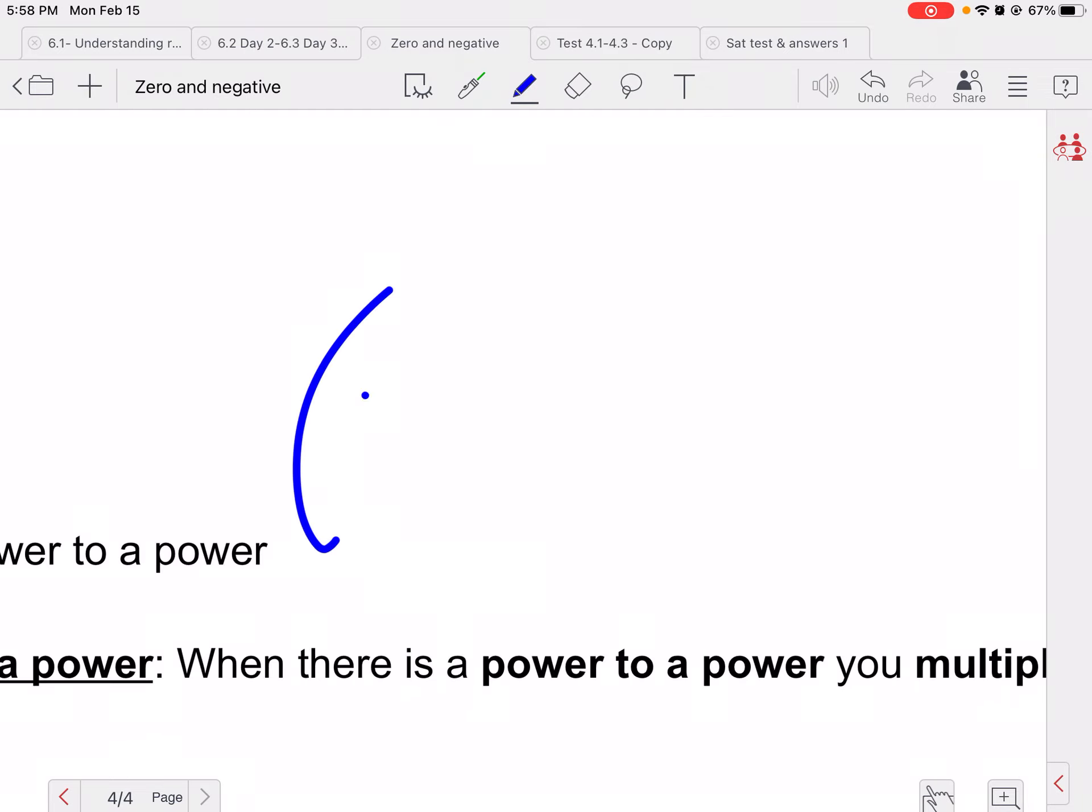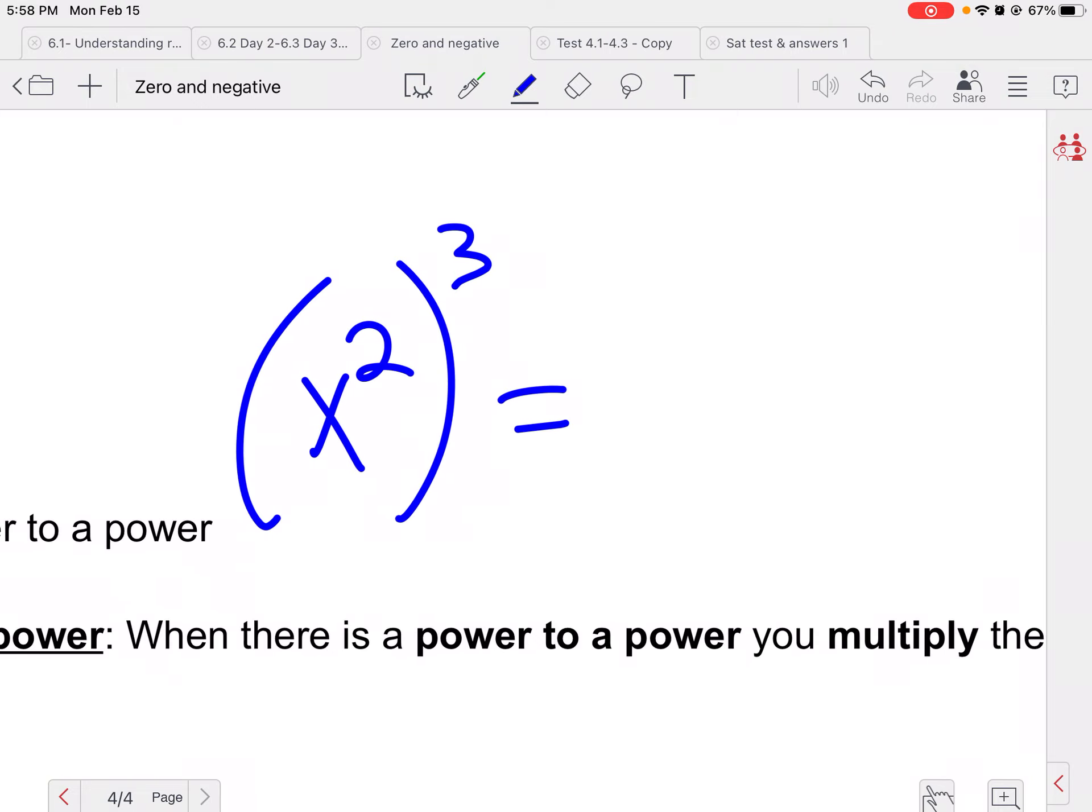When we have a power to a power rule, we can multiply the exponents, and I'm going to show you with an easy example why that works. So if I have x squared to the third power, what that means is I have x squared three times.